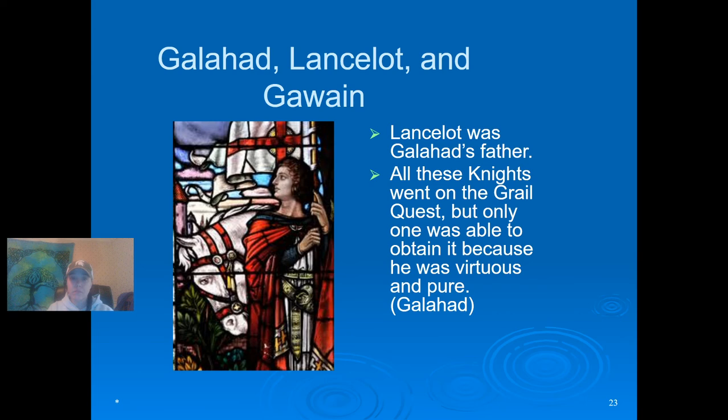Queen Guinevere was the Queen of the Bretons. Her symbols were gold, silver, and bronze. She grieved for Arthur while he was on his Holy Grail quest, and she had an affair with Sir Lancelot that caused the downfall of the Bretons. Queen Guinevere, King Arthur as her husband, and Sir Lancelot as her lover formed the most celebrated love triangle in European literature. Her origins were probably Welsh, and her presence runs strong throughout mainstream Arthurian legend.